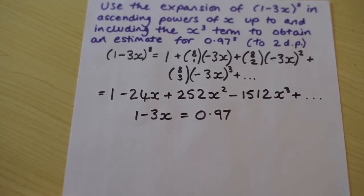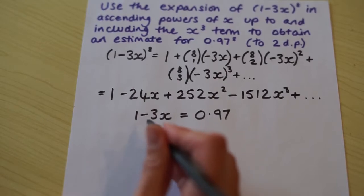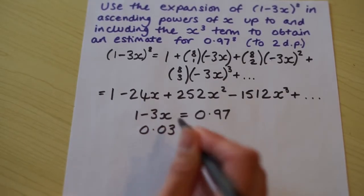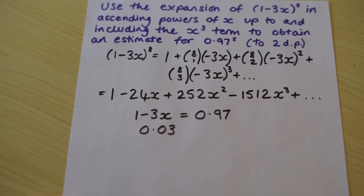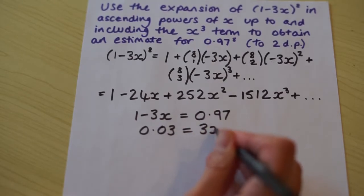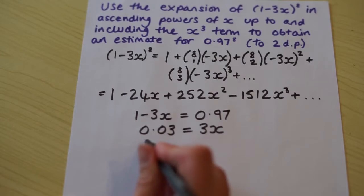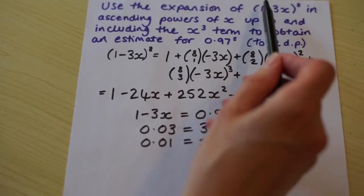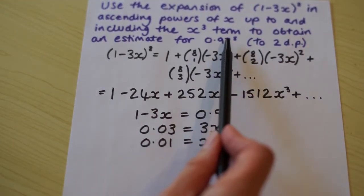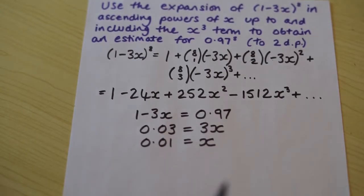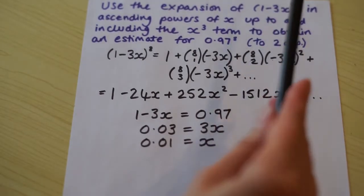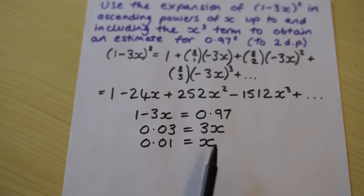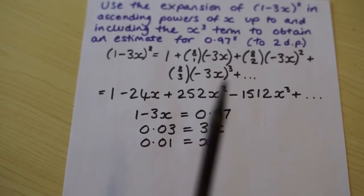So if we take 0.97 from both sides, then we get 1 minus 0.97, which is 0.03. Add 3x to both sides. Okay, divide both sides by 3. And we find out x equals 0.01. So if we substitute 0.01 into this bracket and work that out, we will find out that it equals 0.97. So as we've expanded that bracket to this, all we have to do is put this value of x into the expansion, and we get our estimate.